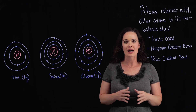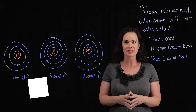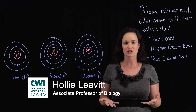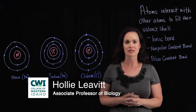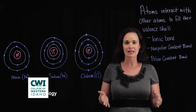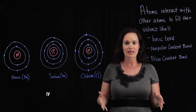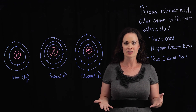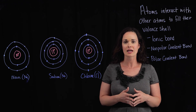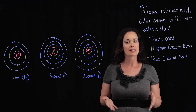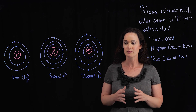In the last video I introduced the octet rule and talked about how electrons are assigned to the orbital shells that surround the nucleus of atoms. We also talked about the idea that all atoms want to have a full valence shell — a full outermost shell — because that is how they are most stable.